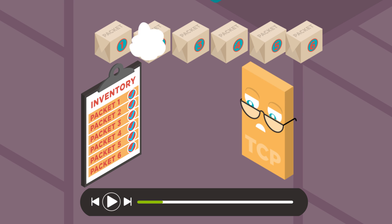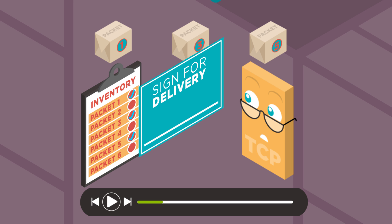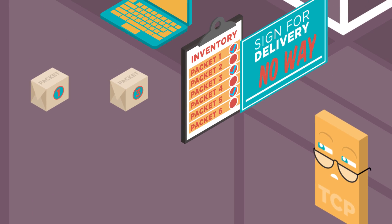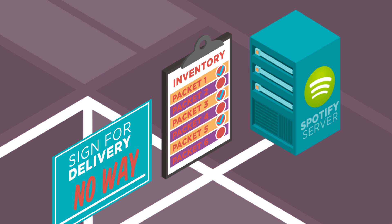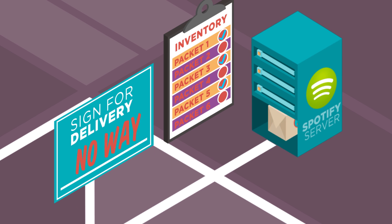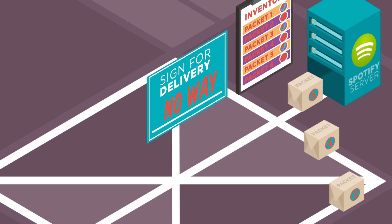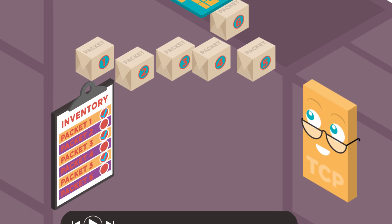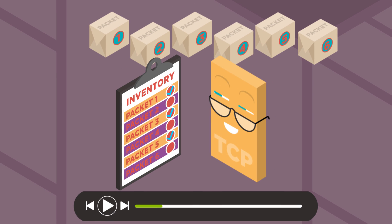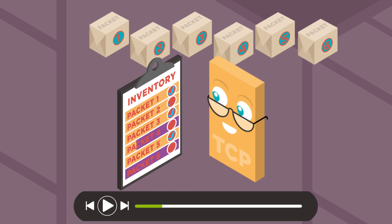If TCP finds some packets are missing, it won't sign. Otherwise, your song wouldn't sound as good or portions of the song could be missing. For each missing or incomplete packet, Spotify will resend them. Once TCP verifies the delivery of many packets for that one song request, your song will start to play.